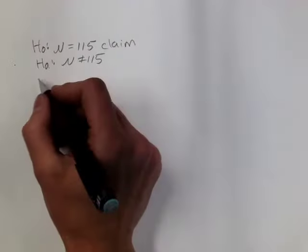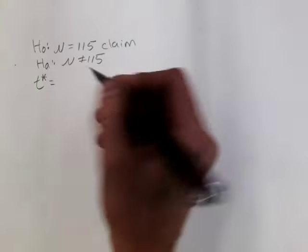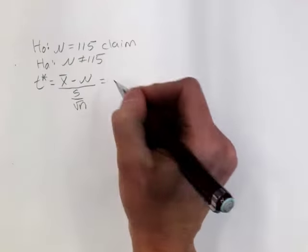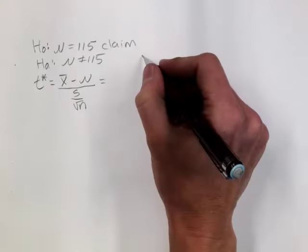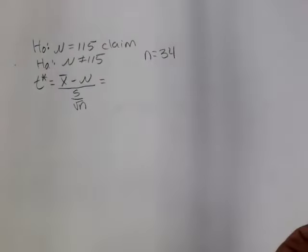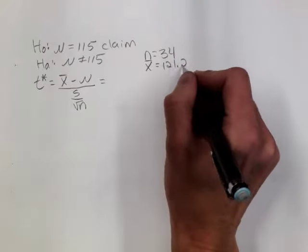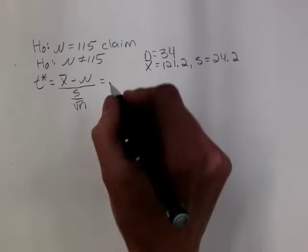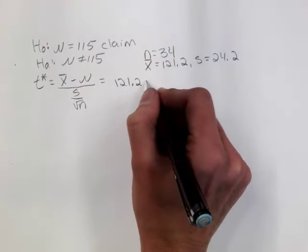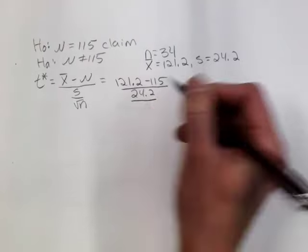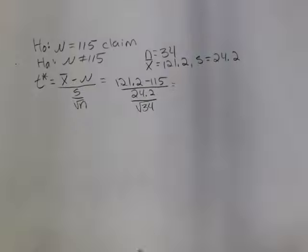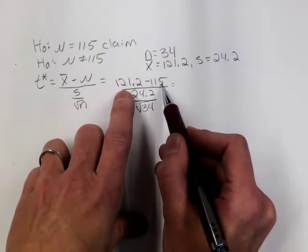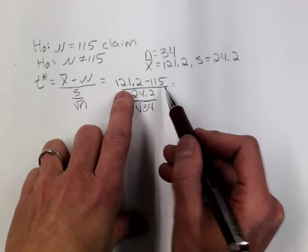First, I want to calculate the standardized test statistic: x-bar minus the claimed parameter over s over the square root of n. From the problem, n = 34, sample mean = 121.2, standard deviation = 24.2. Plugging in: 121.2 minus 115 over 24.2 over the square root of 34. We're looking at whether this difference in the numerator is statistically significant.